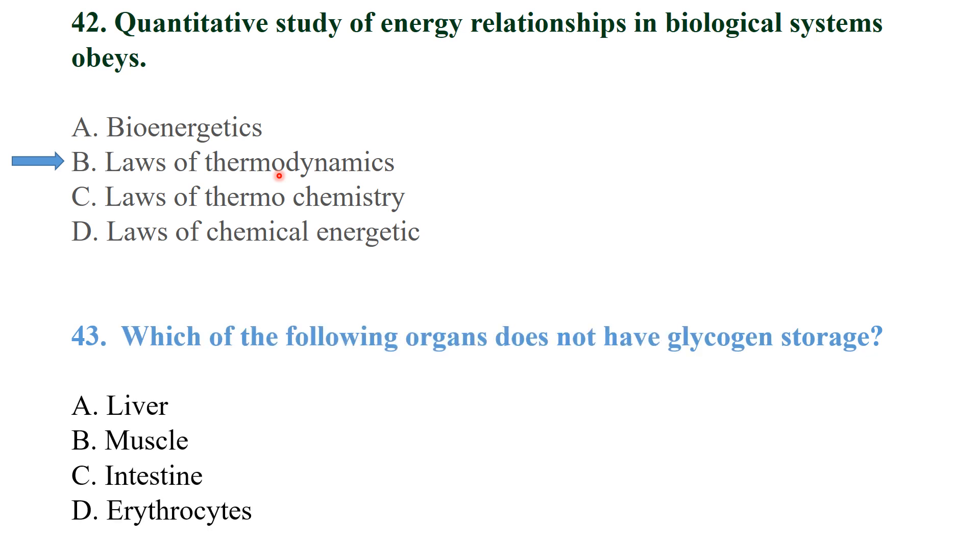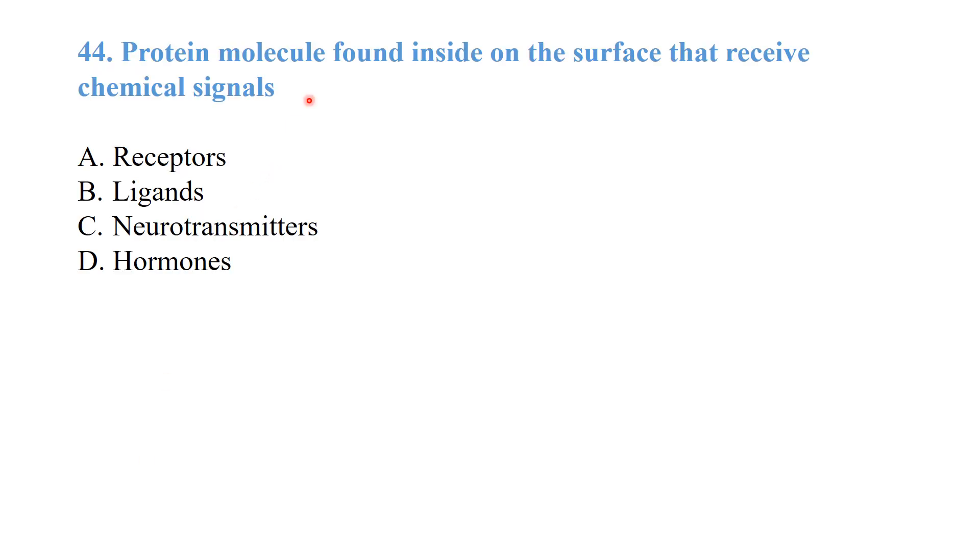Which of the following organ does not have glycogen storage? Erythrocyte has no glycogen storage because erythrocyte has full capacity for the hemoglobin protein. Molecules found on the surface that receive chemical signals - the receptors are on the surface of the cell and the ligands are on the surface of the controlling chain.